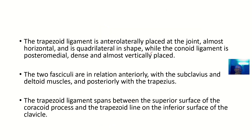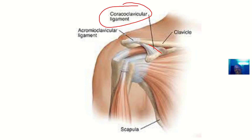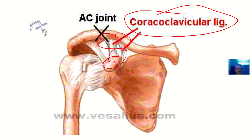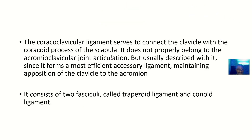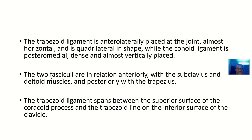The trapezoid ligament is anterolaterally placed at the joint, almost horizontally, and is quadrilateral in shape — it has four sides. The conoid ligament is posteromedial, dense, and almost vertically placed. You can see the conoid is almost vertical, while the trapezoid is quadrilateral.